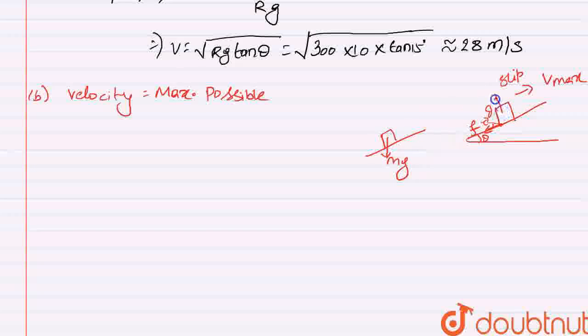Consider again the normal reaction as N, then its component will be like this, N cos theta upward, and sin theta along horizontal direction. And the frictional force F cos theta, and the frictional force downward component, that is frictional force into sin theta.